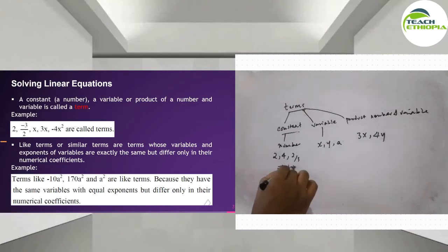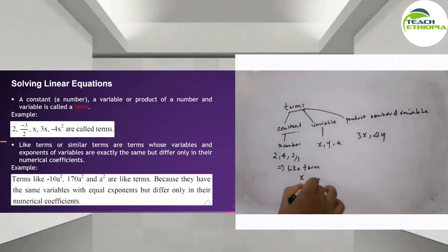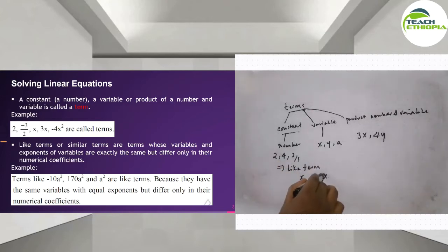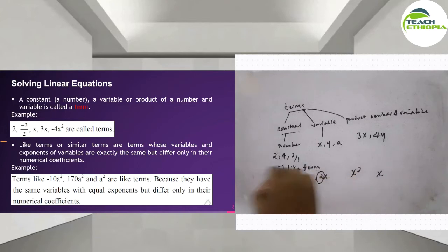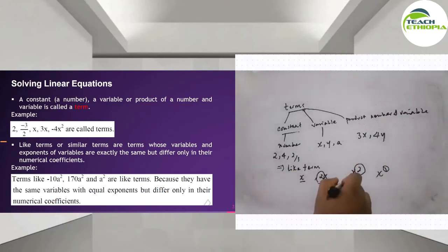Like terms — like terms are those terms that have the same variable and the same exponent. For example, x and 2x are like terms because both have variable x with exponent one. They differ only in their coefficient.